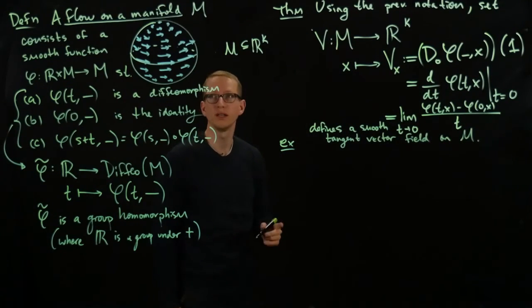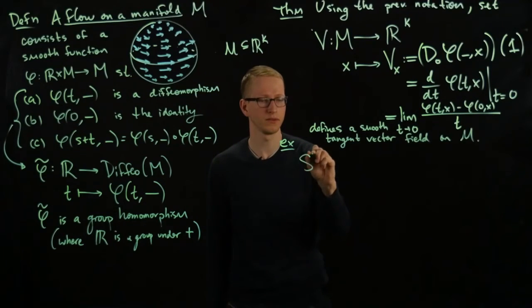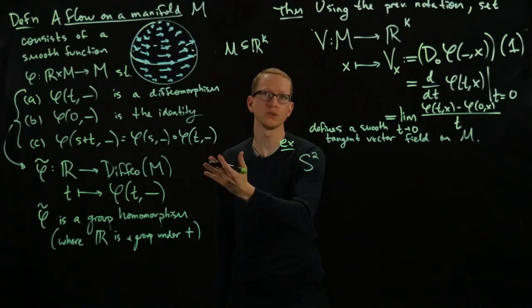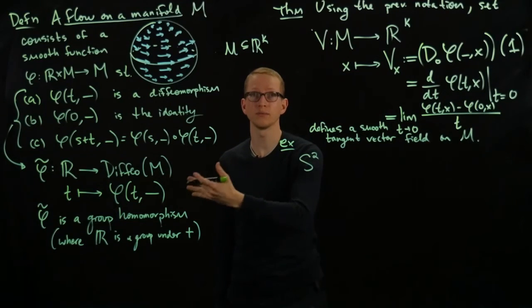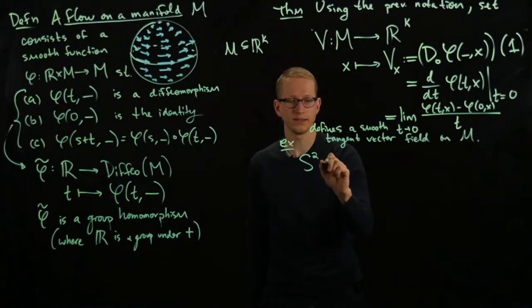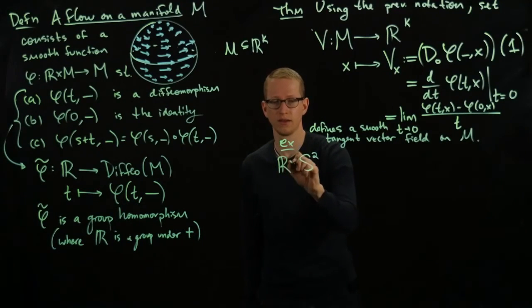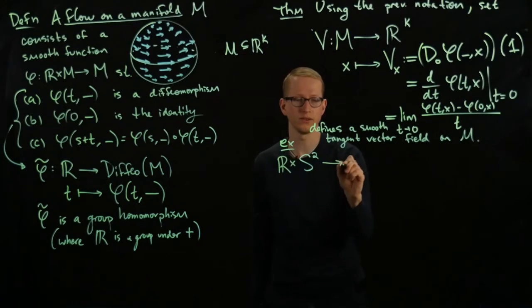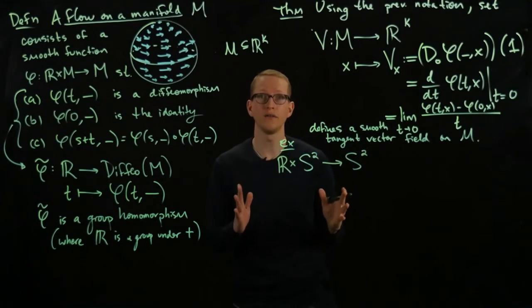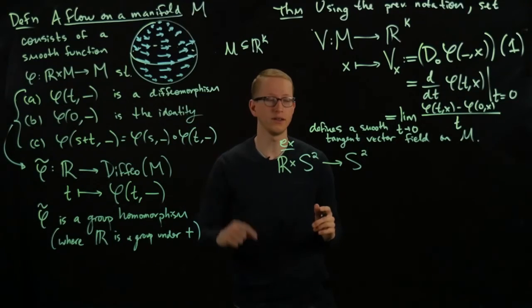And as an example, let's take the sphere. And let's take the one-parameter family, also called a flow. A flow is sometimes called a one-parameter family of diffeomorphisms. Let's take the flow that sends R cross S² to S².